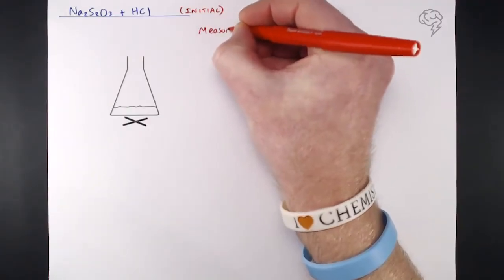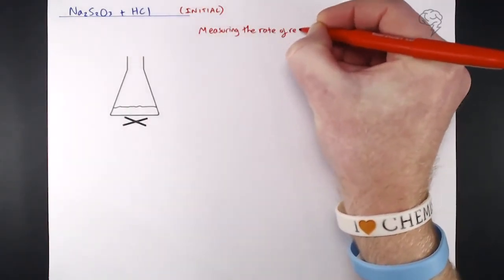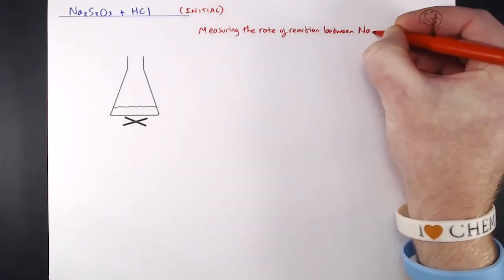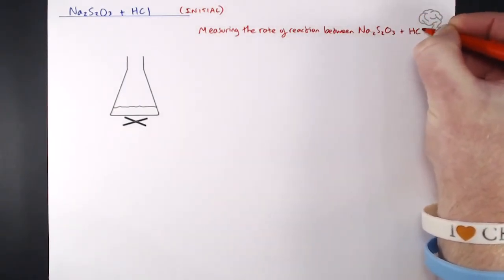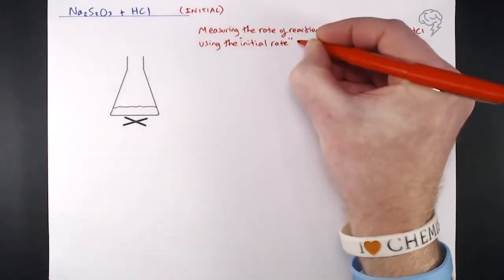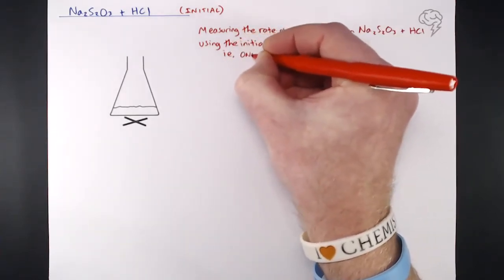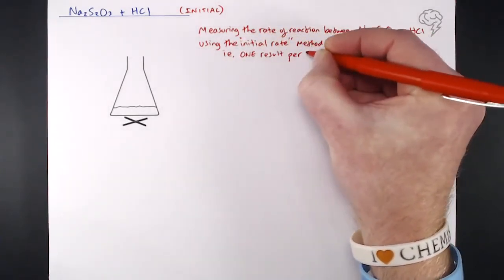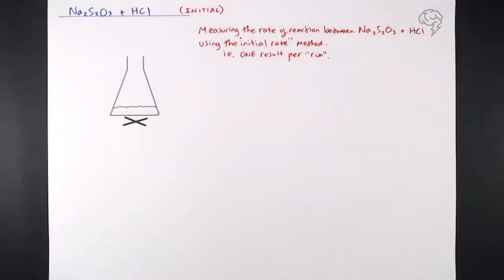In summary, what we're doing is measuring the rate of reaction between sodium thiosulfate and hydrochloric acid using what's known as the initial rate method. What that means is we've got one result per run. So we'll run an experiment, a reaction, and what we're doing is we're timing it to completion. So we get one result per run. We're not continually measuring something as the reaction proceeds from start to finish, like in the continuous rate method. What we're doing is we start the timer, when the reaction is finished, we stop it. And that's our initial rate method.